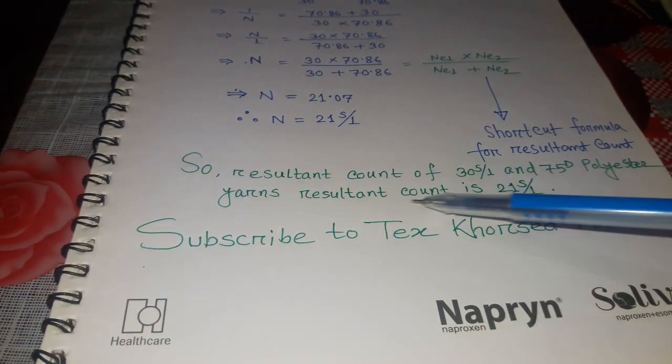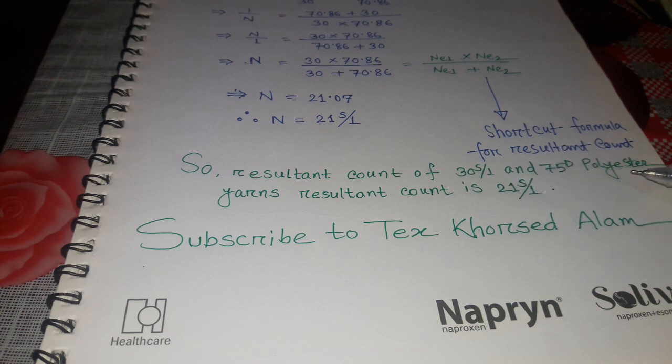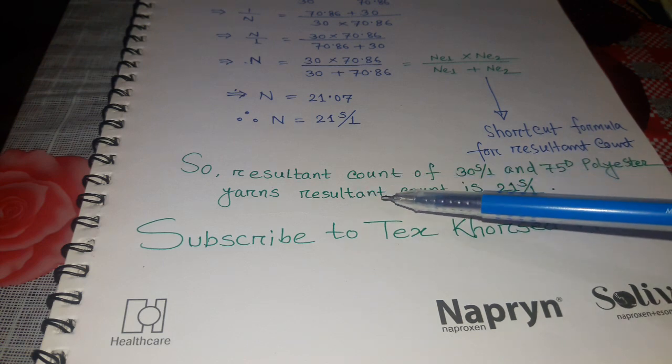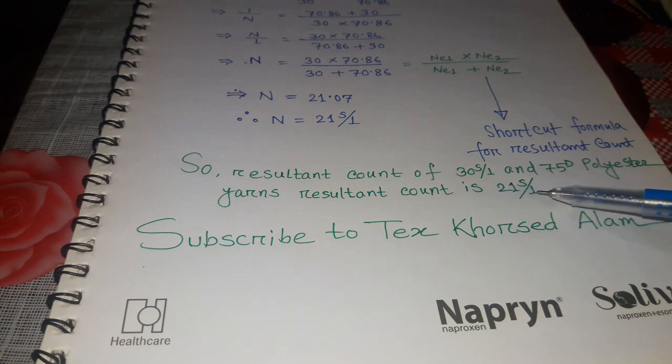So the resultant count of 30 single cotton and 75 denier polyester yarn gives a resultant count of 21 single.